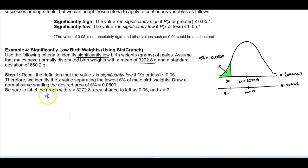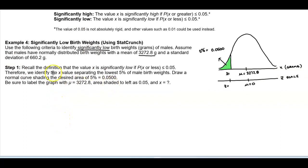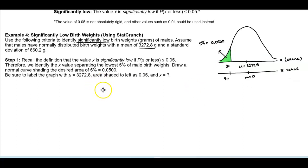So in step one, recall again the definition that the X value is significantly low, which means the probability of X or less is less than or equal to 0.05. Therefore we identify the X value that's separating the lowest 5% of male birth weights. So we have drawn the normal curve shading the desired area of 5% which is 0.0500, and then be sure to make sure that you label where the mean is and then the area that's to the left of 0.05, which ultimately we want to determine what is the value of X.